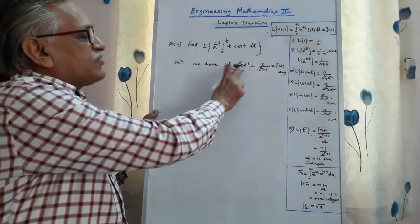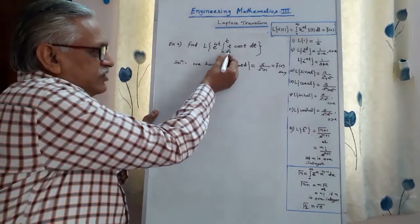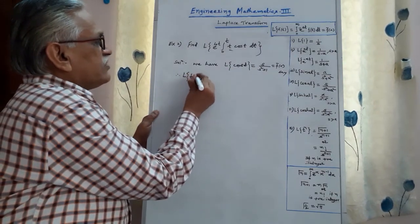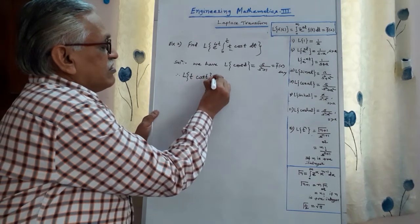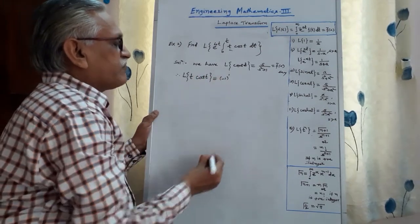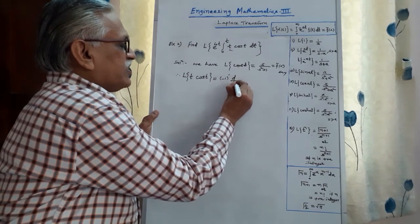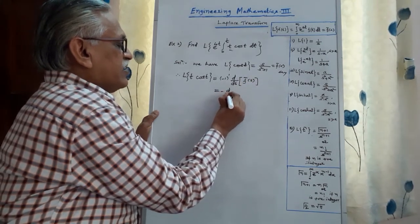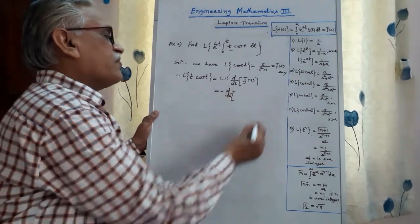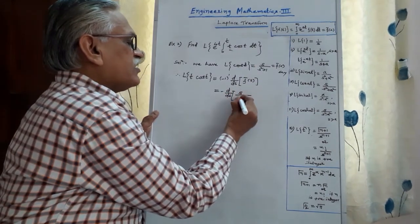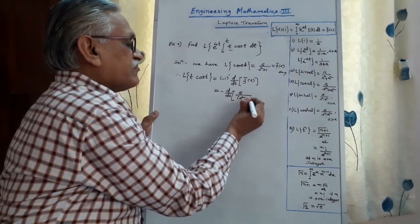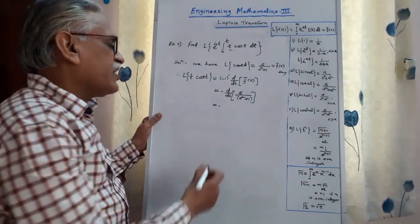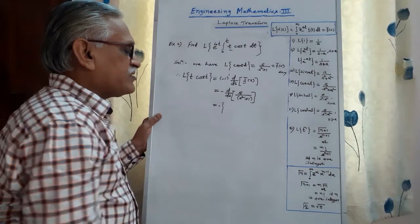Having obtained the Laplace of cos(t) as s/(s² + 1), we apply the multiplication by t theorem. The Laplace transform of t·cos(t) is (−1)^n times the nth order derivative of f̄(s), with n = 1, giving minus the first order derivative of f̄(s).